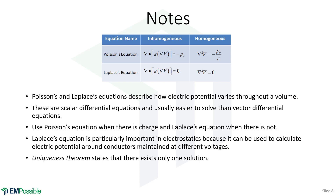There is something called the uniqueness theorem: there is only one solution to this. That means if you take a wild guess and plug it back into Laplace's equation, if you can take the Laplacian of your guess and it equals zero, that is the solution — because there can't be any other solution.